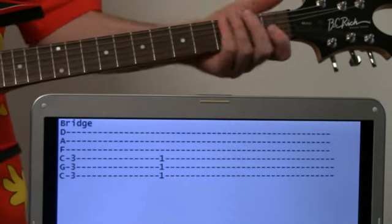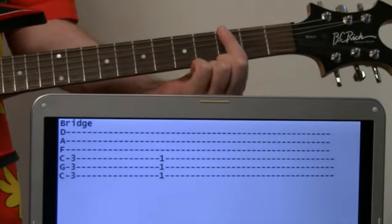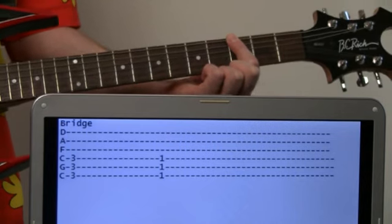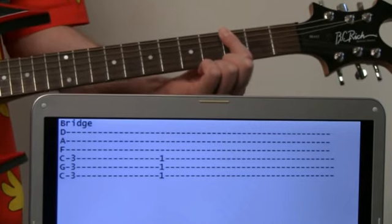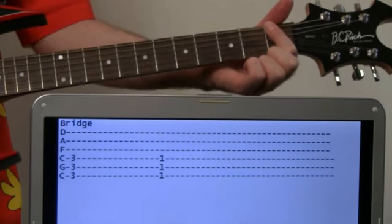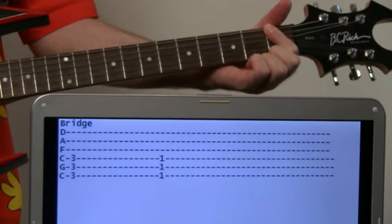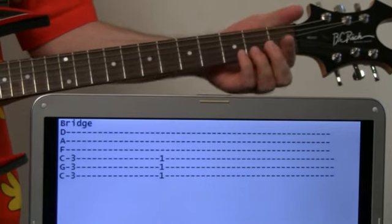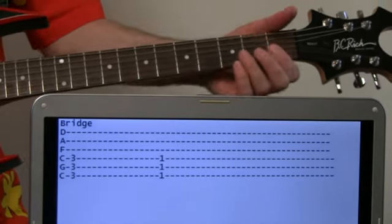Bridge section comes in real simple. We're just going to give one big strum to the third fret power chord, just slide down two frets to the one, same thing. And then you would just put in some of the main riffs after that.